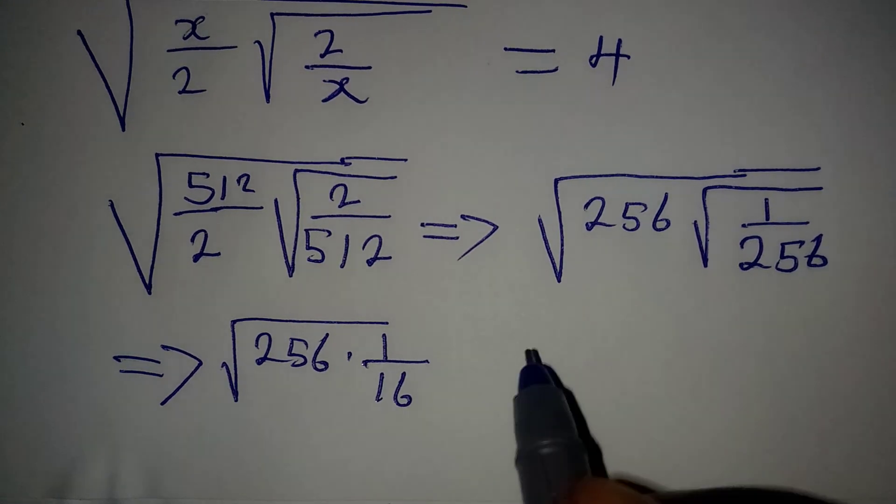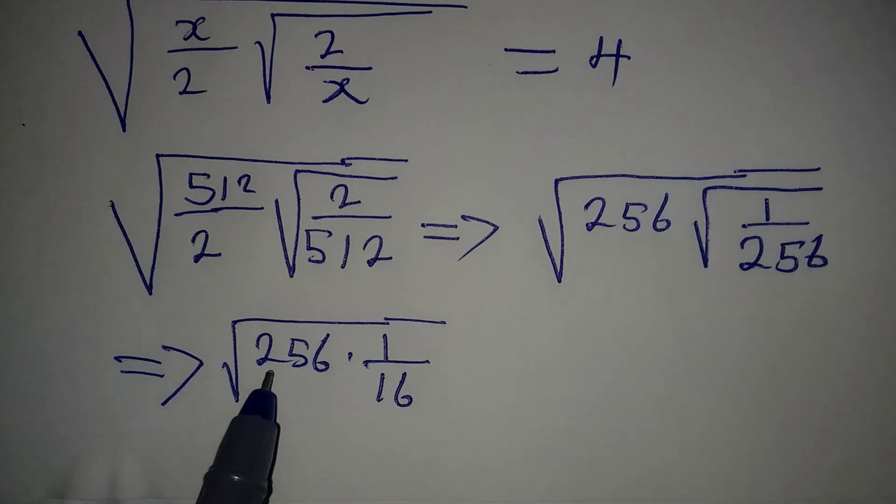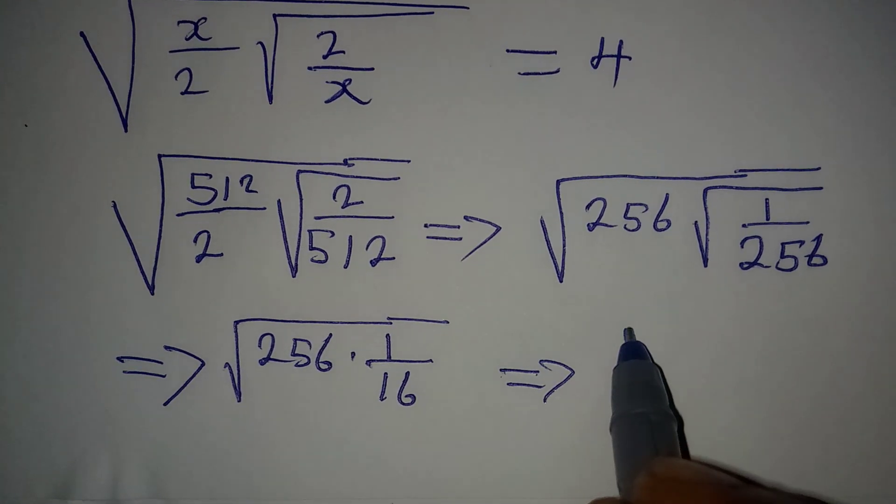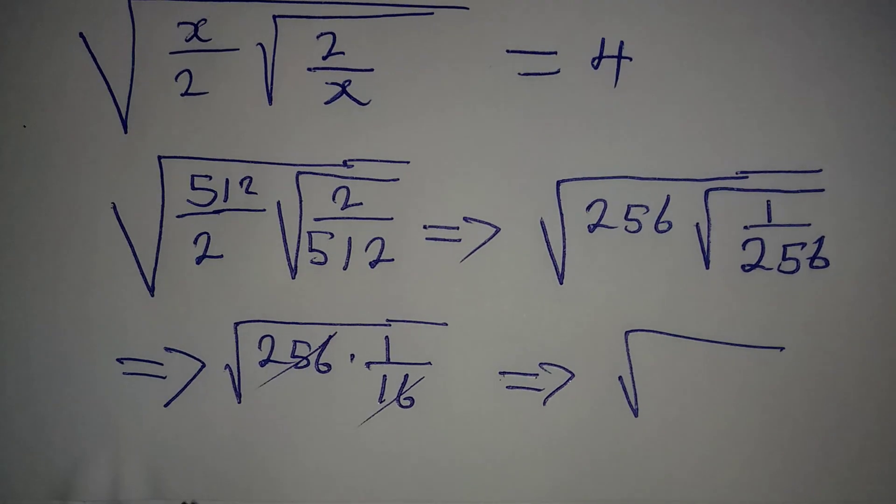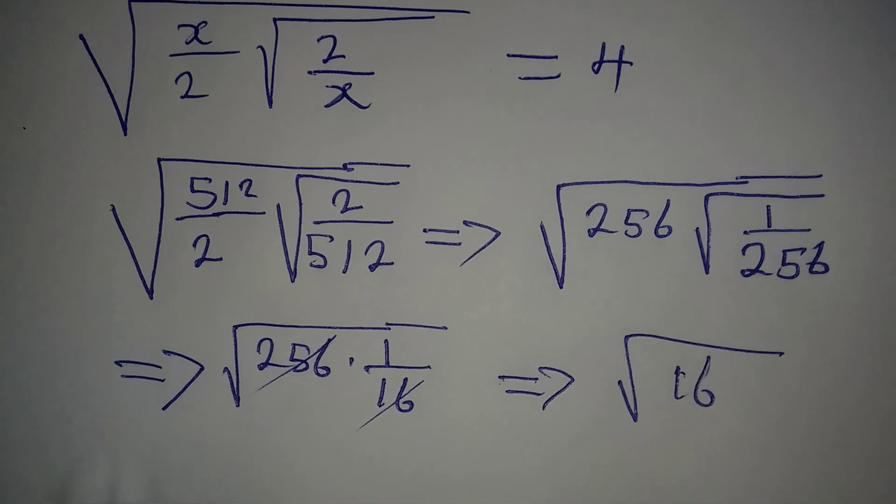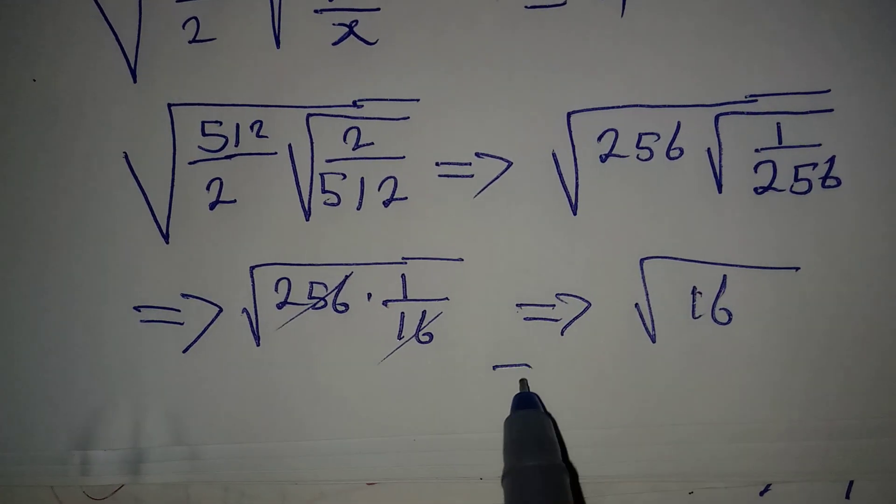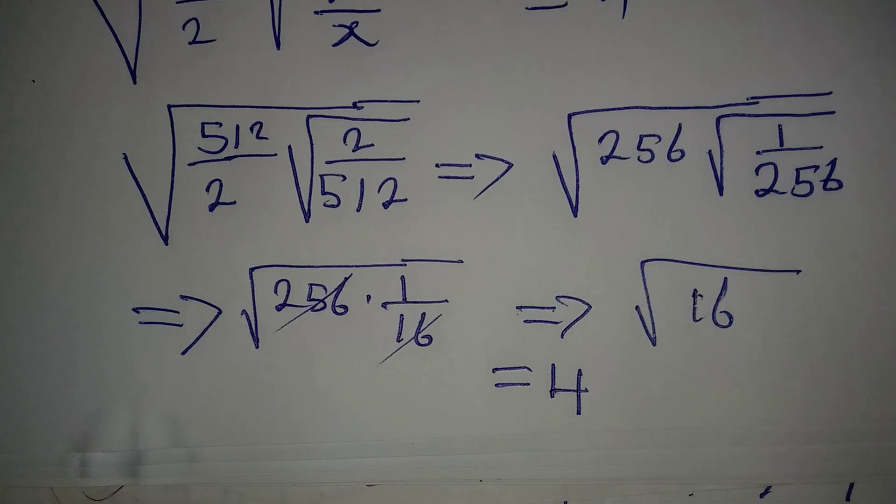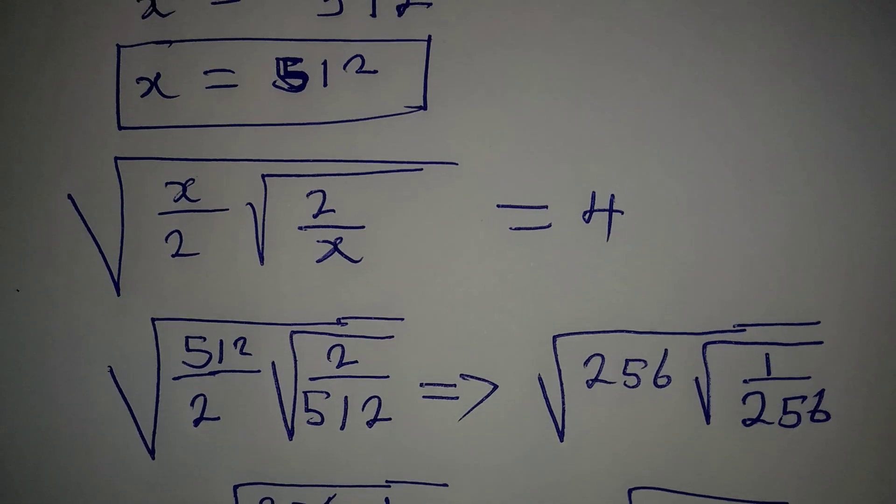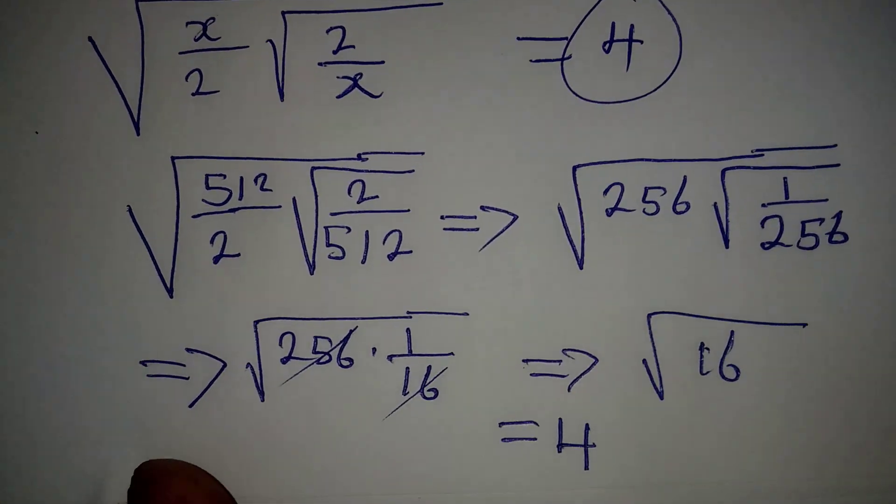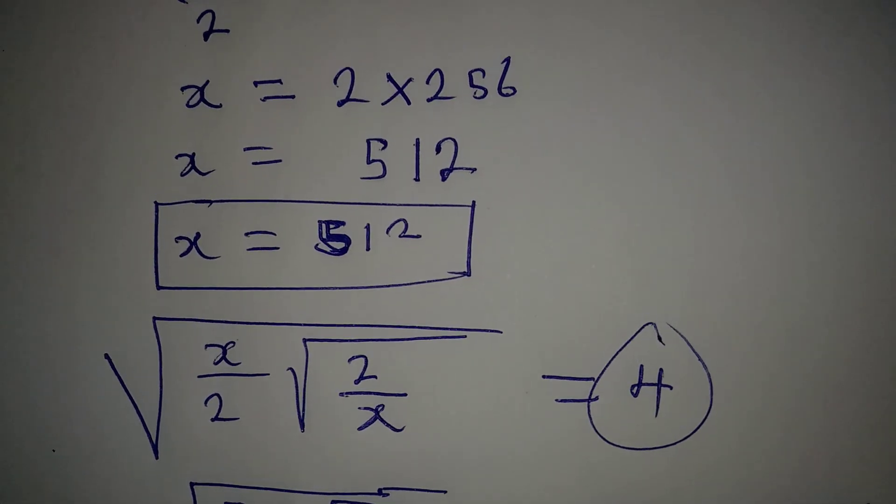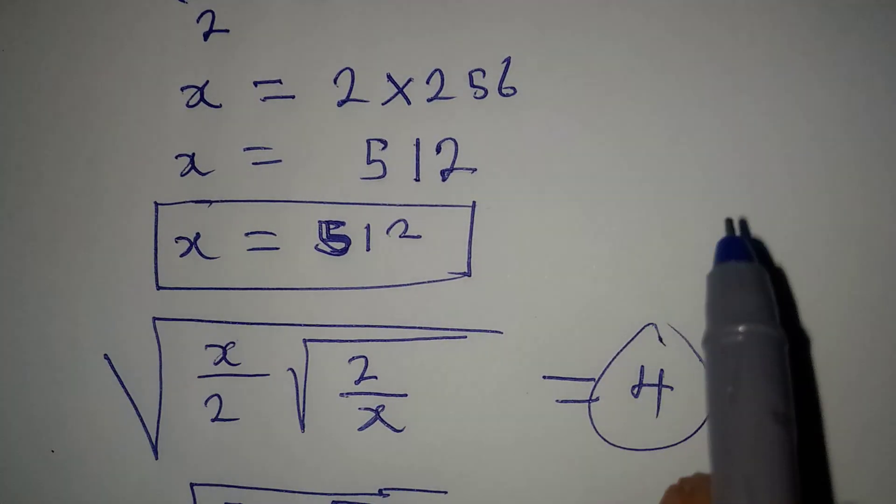Okay, so from here let's continue. We can now multiply this, so that if we do that, this implies that we are having 16 times this will give us another 16, right? So we have square root of 16, and square root of 16 would definitely give us 4, and it is 4 that we had on the right hand side of the equation. Okay, so this means that we are very correct to say x is equal to 512.